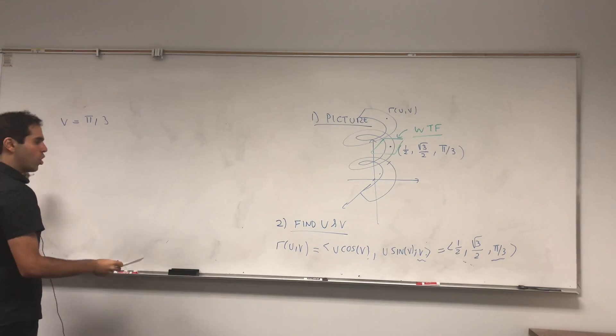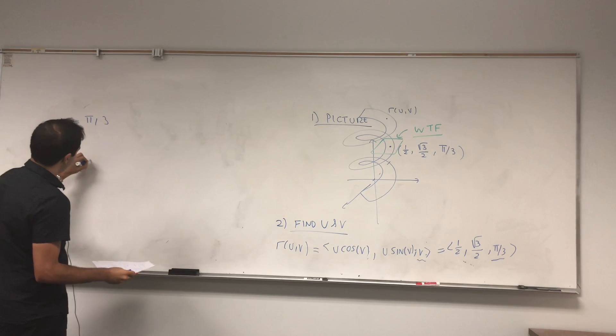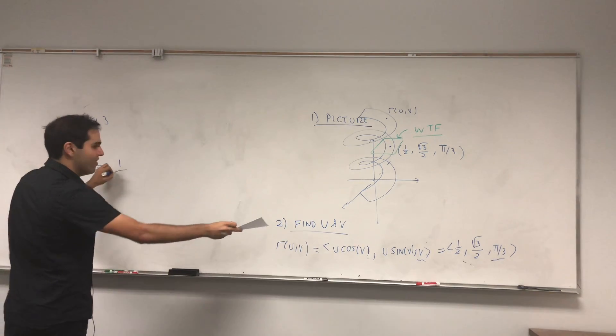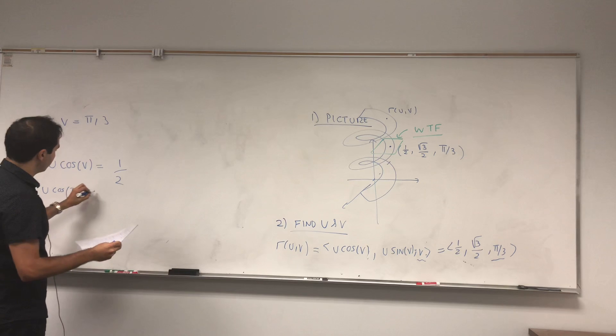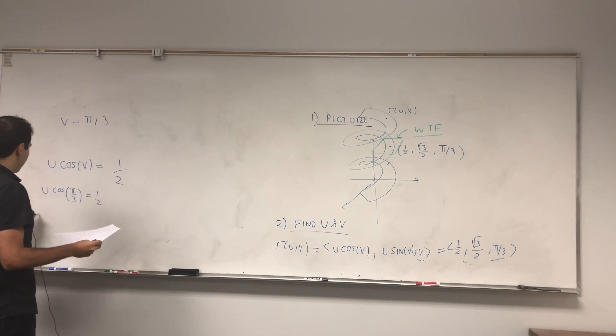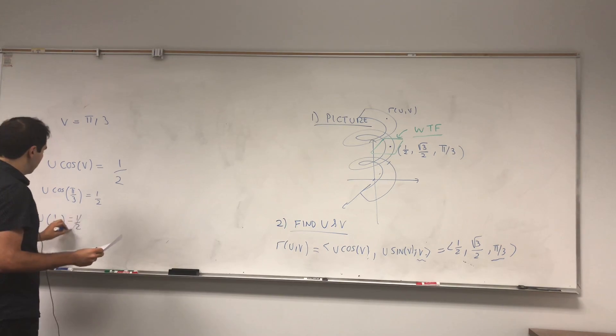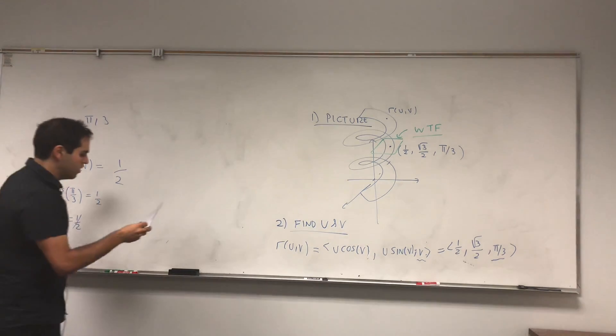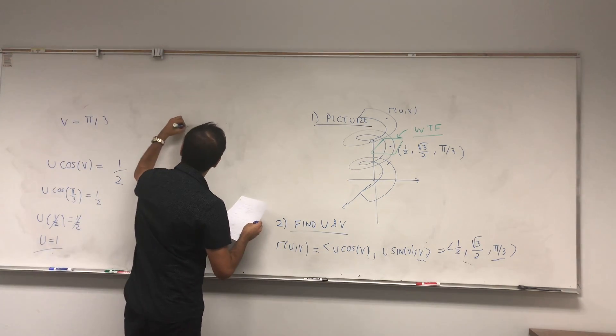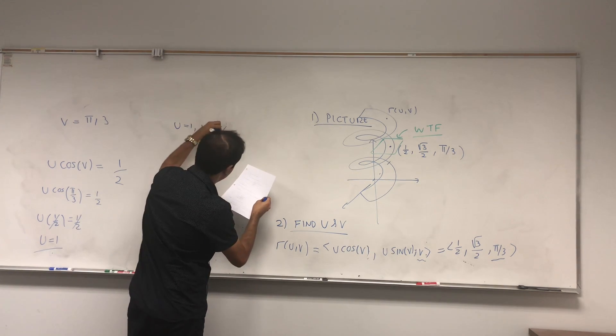And then, let's see what u cosine of v is. Well, by definition, it's equal to one-half. But now, v is pi over three. So, u cosine pi over three is one-half. And therefore, u times one-half equals to one-half. So, u equals to one. And you can indeed check that with this u and v, u sine v is the square root of three over two. Very good. So, u equals to one, v equals to pi over three.